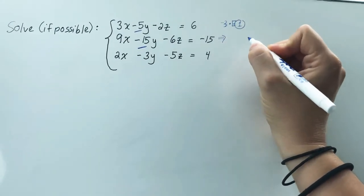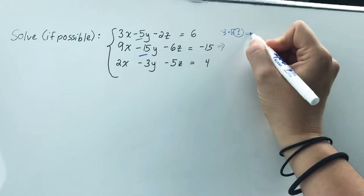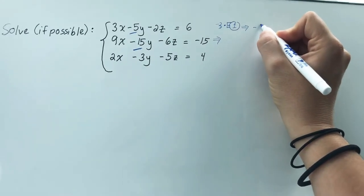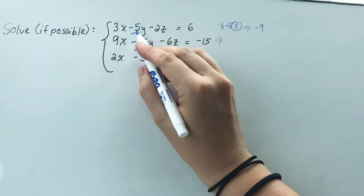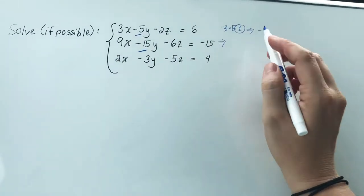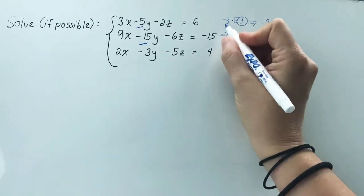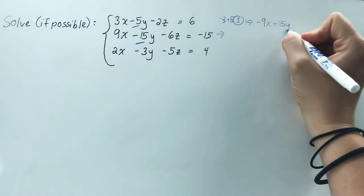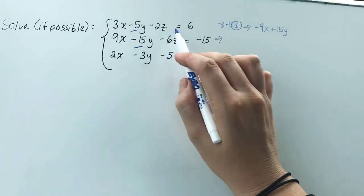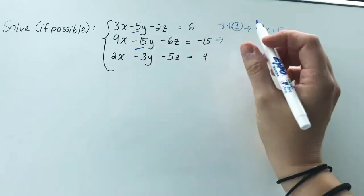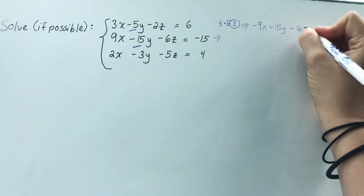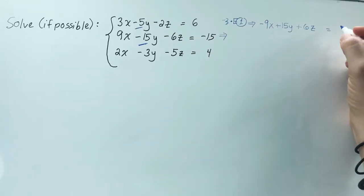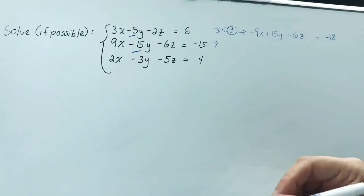So if you took negative 3 times equation 1, that new equation would become negative 9x. Sorry, I was looking at the second part. So 3 times negative 3 is negative 9x. Negative 3 times negative 5 is positive 15y. And negative 3 times negative 2 is positive 6z. Negative 3 times positive 6 is negative 18. So that would be the new equation 1 there.